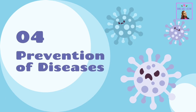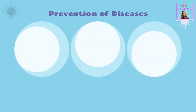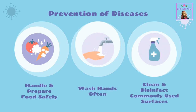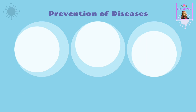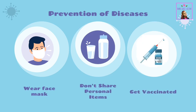Prevention of diseases: Healthy habits prevent germs and infectious diseases from spreading. Learn, practice, and teach healthy habits. Handle and prepare food safely, wash hands often, clean and disinfect commonly used surfaces, wear a face mask, don't share personal items, get vaccinated, and stay home when sick. Making healthy choices can prevent the likelihood of getting a chronic disease and improve your quality of life.